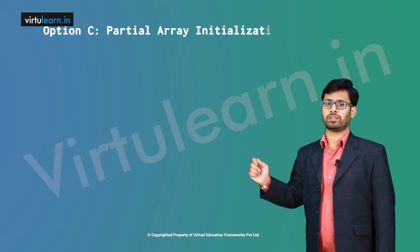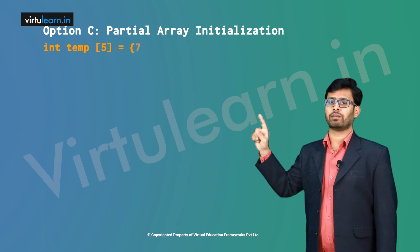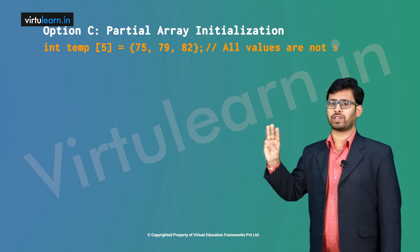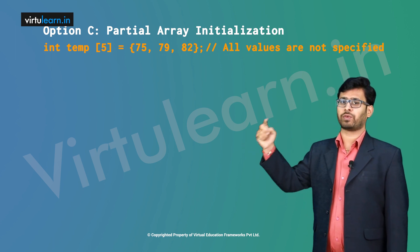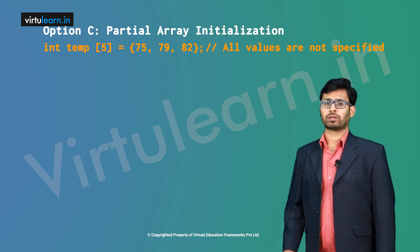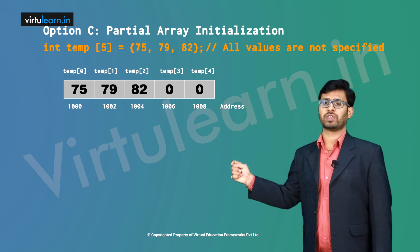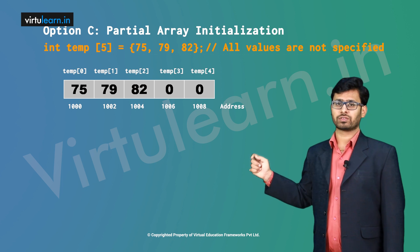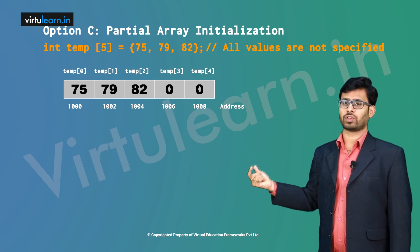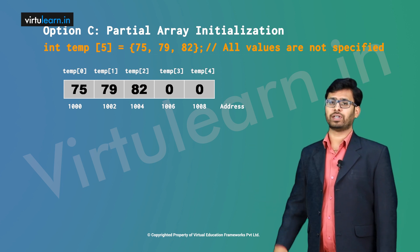Option C is partial array initialization, which means you initialize an array with some size but fewer values. For example, int temp[5] = {75, 79, 82}. Here, only 3 values are specified but the array size is 5. The values not specified will be allocated to their default values — for integers, the default value is 0. So temp[0] = 75 at 1000, temp[1] = 79 at 1002, temp[2] = 82 at 1004, temp[3] = 0 at 1006, and temp[4] = 0 at 1008. This is how allocation is done in partial array initialization.